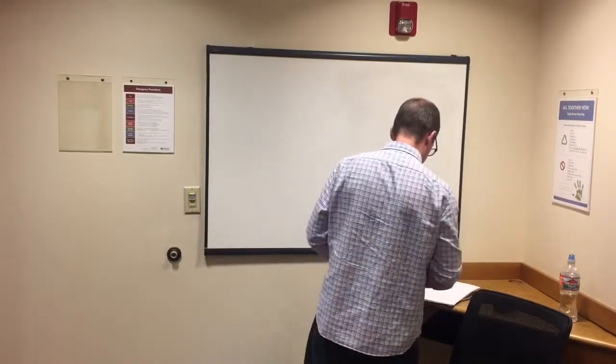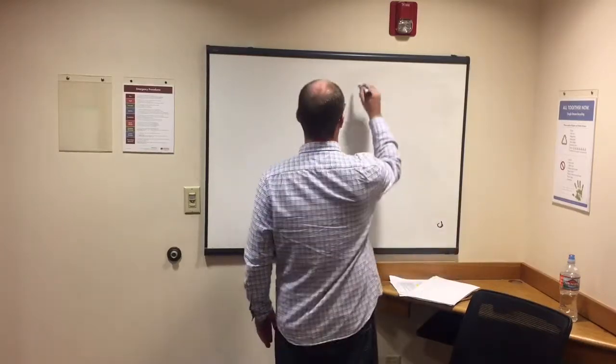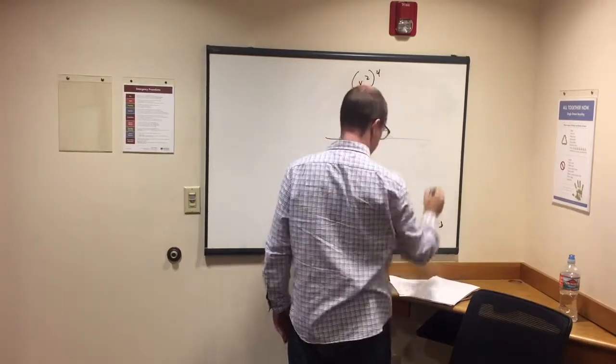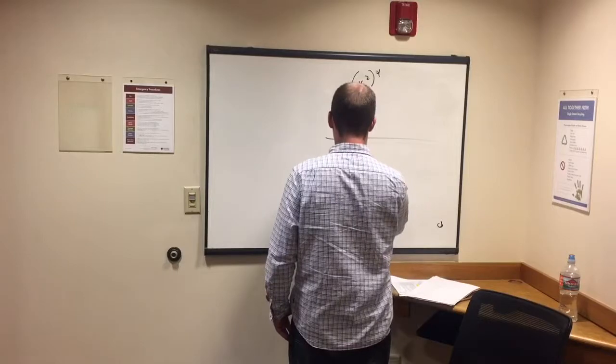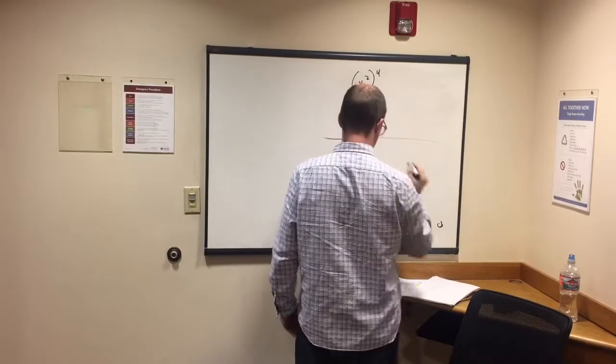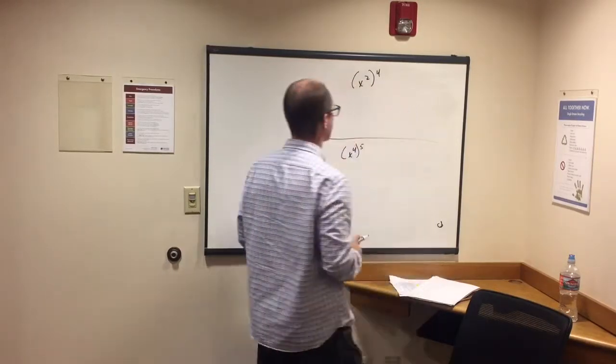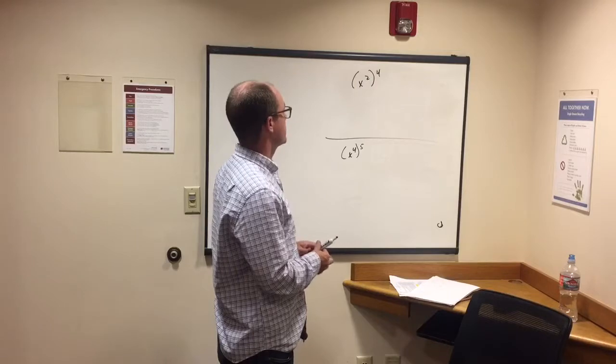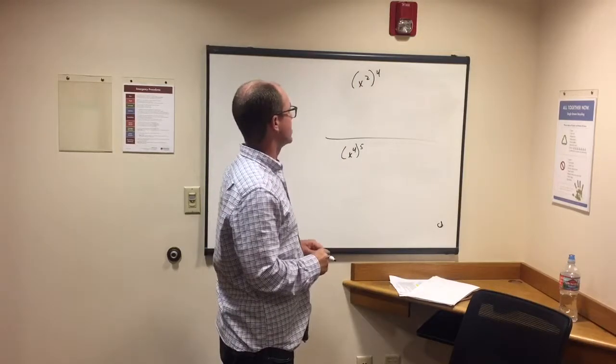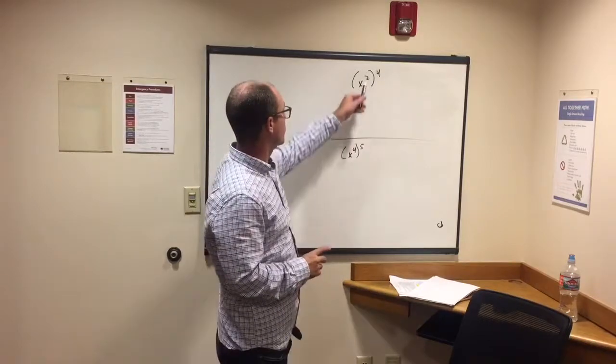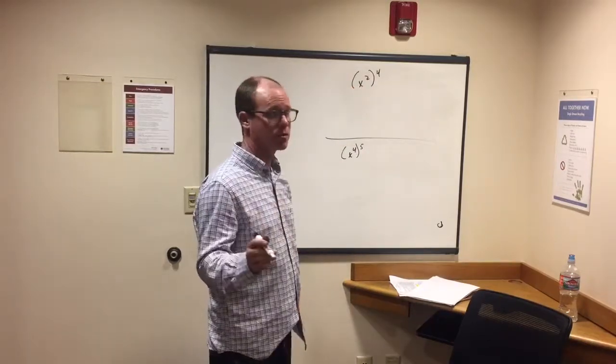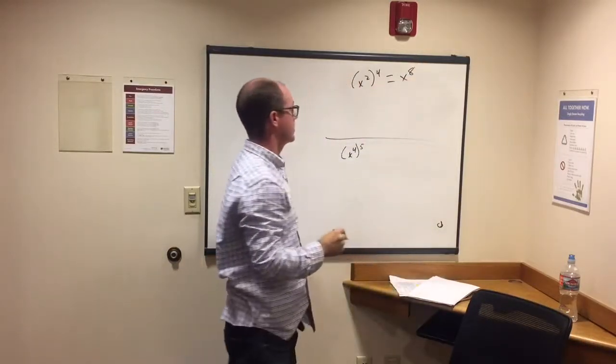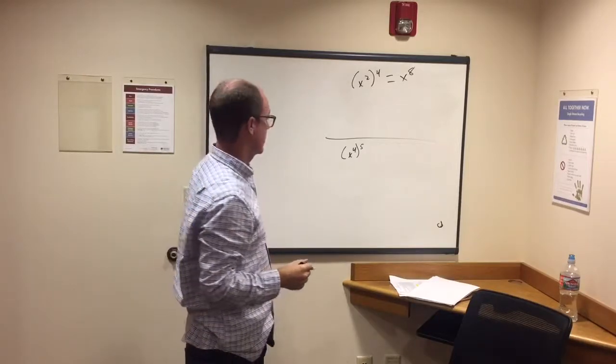Okay, I've got two more. So here we have x squared to the fourth. So the typical mistake here is that people add these two exponents together. Where when you have one inside the parentheses, one outside the parentheses, you have to multiply these two. Two times four is eight, so we get x to the eighth, not x to the sixth.